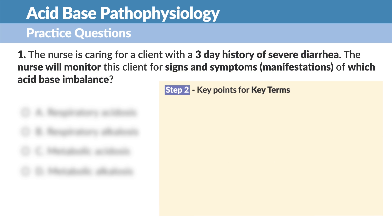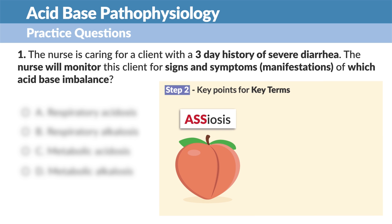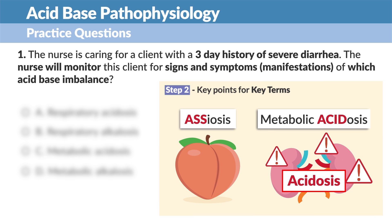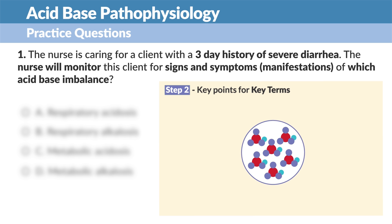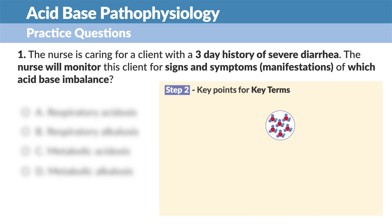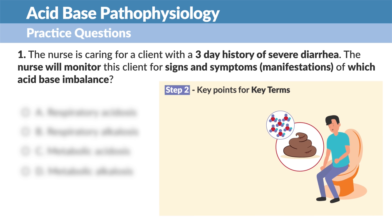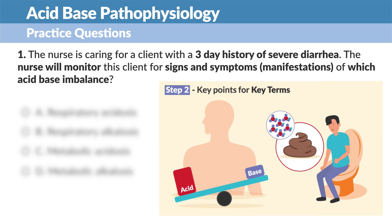Before looking at the options, always think: if it comes out as acidosis, like diarrhea, then it's metabolic acidosis, since all the base, or bicarb — HCO3 — in the intestines goes from the body and into the potty, leaving the body in acidosis.